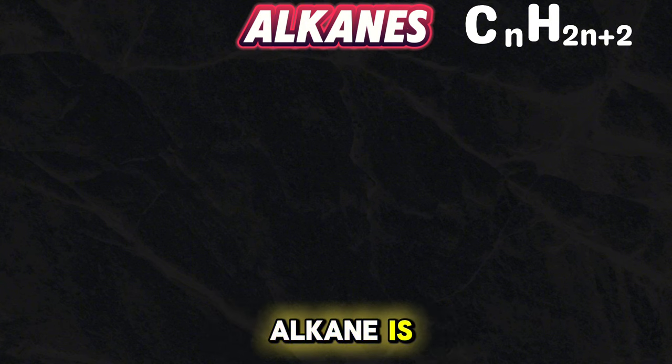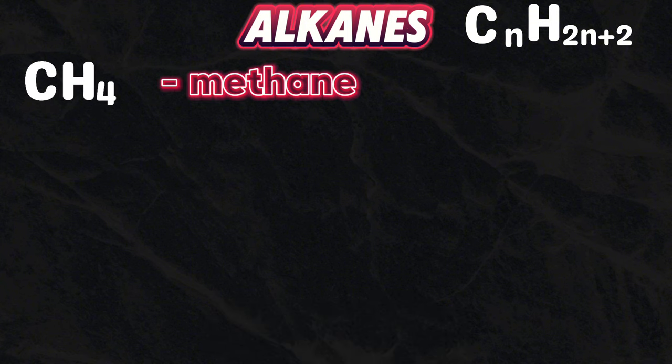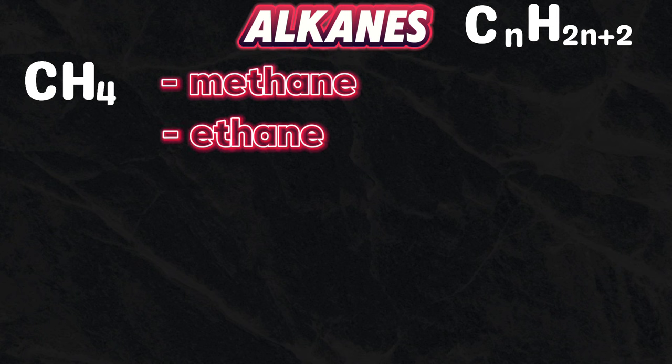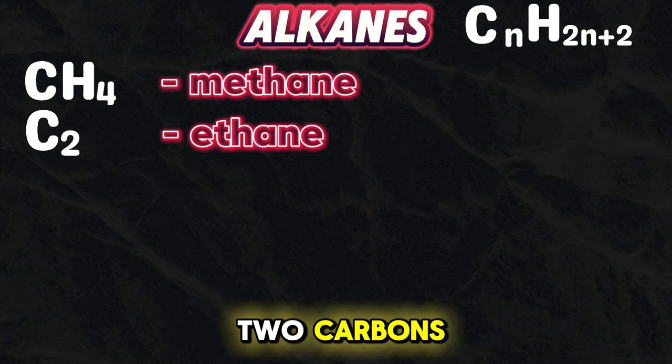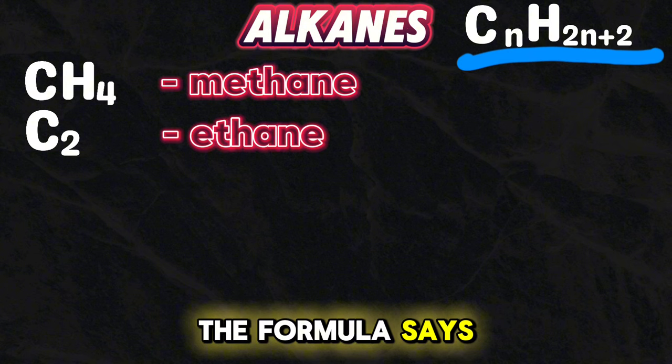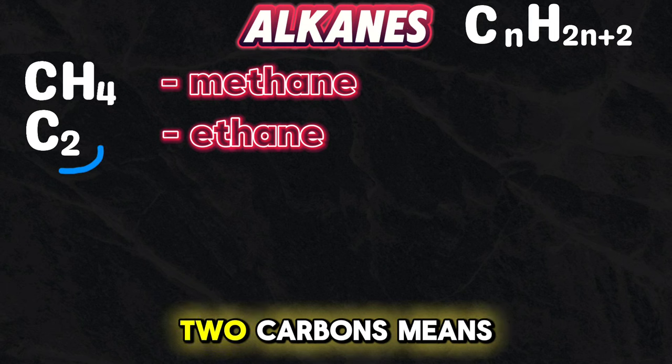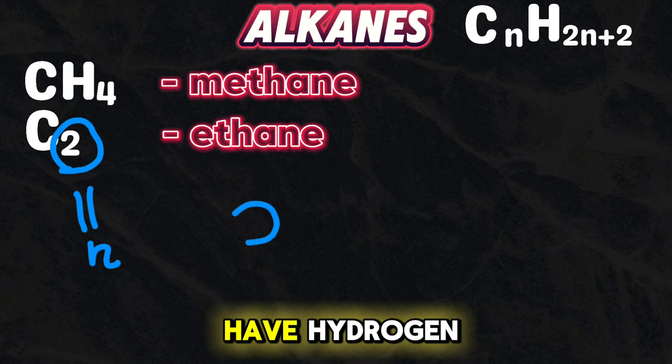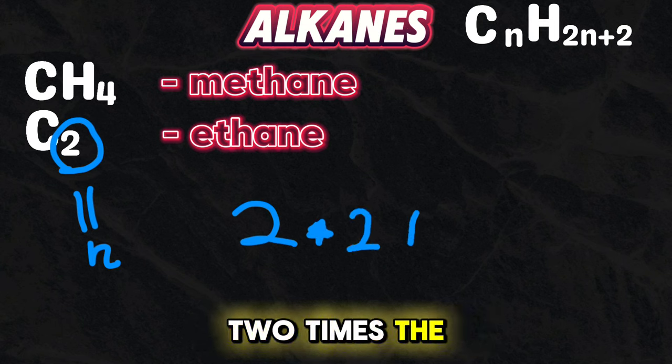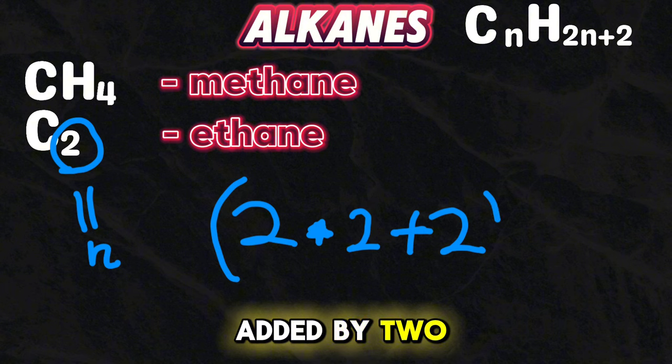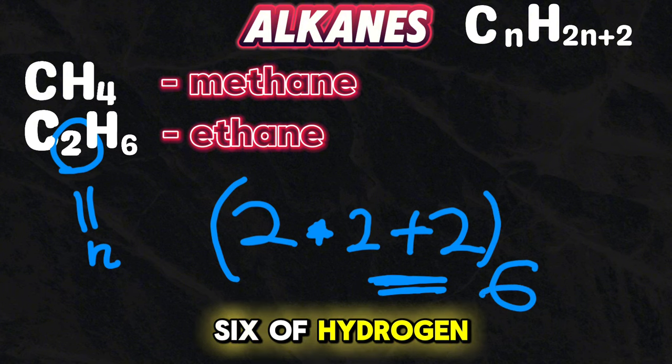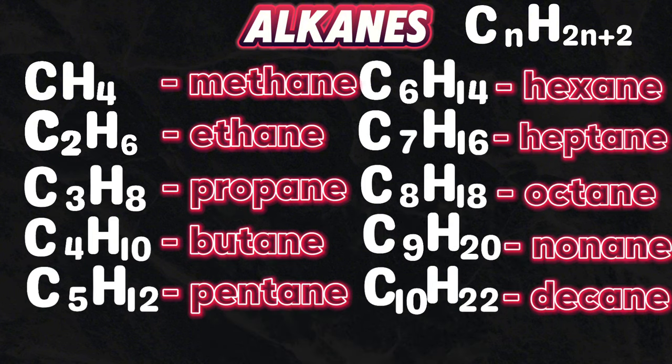Now the first alkane is CH4, which is methane. The second one is ethane, which will have two carbons. This brings us to the formula. The formula says CnH2n+2. This means that n is the number of carbons. We have two carbons, which means we will have hydrogen two times the number of carbons plus two. This means we will have six hydrogens. The same applies for the rest of the compounds, from methane to decane.